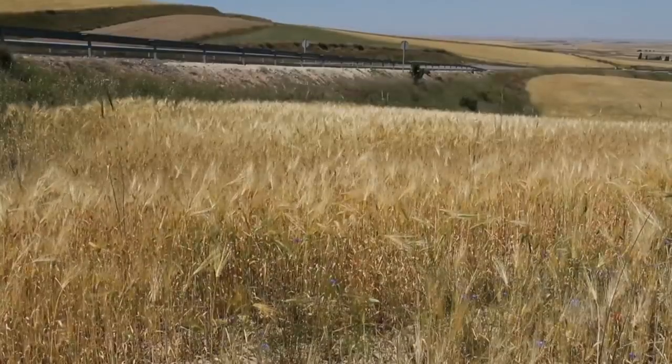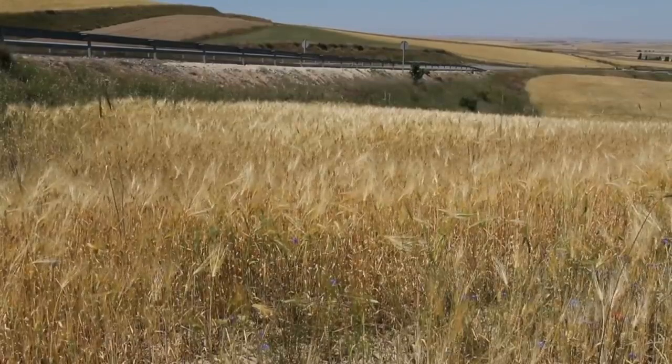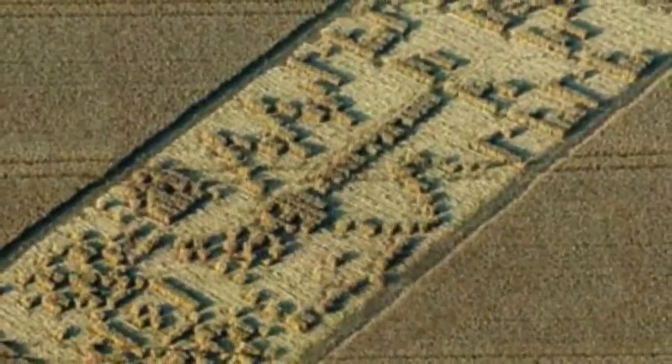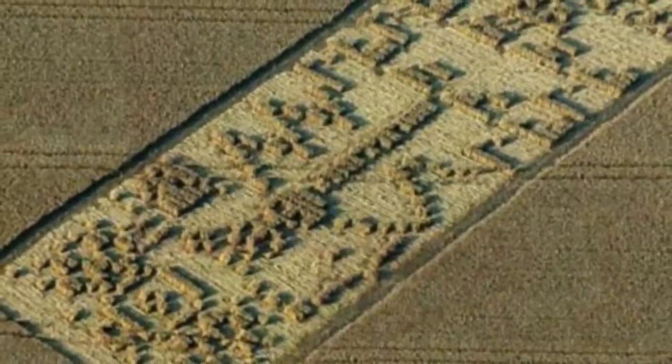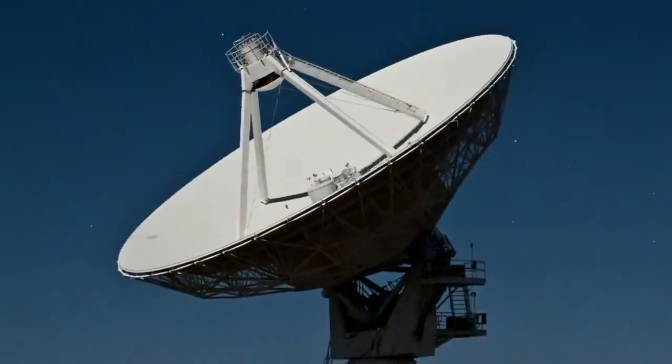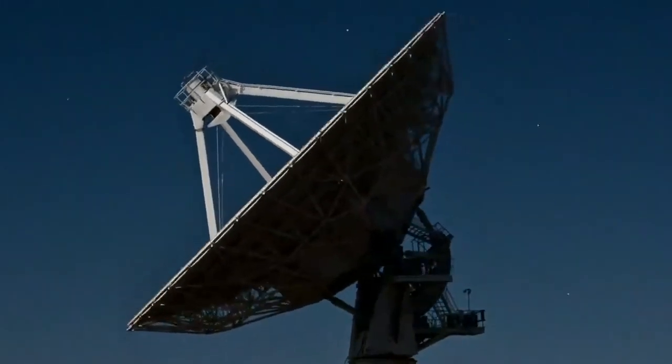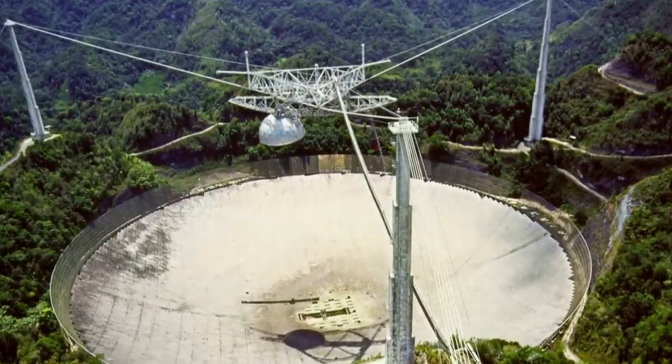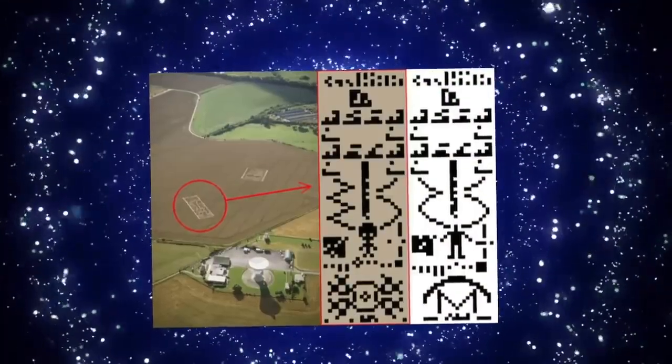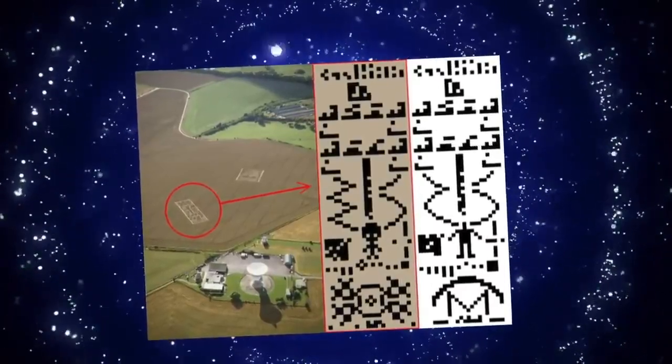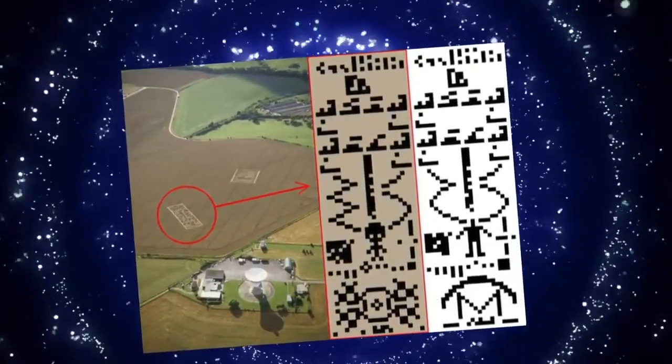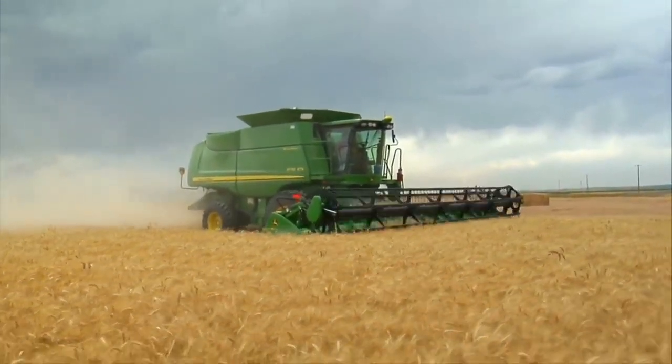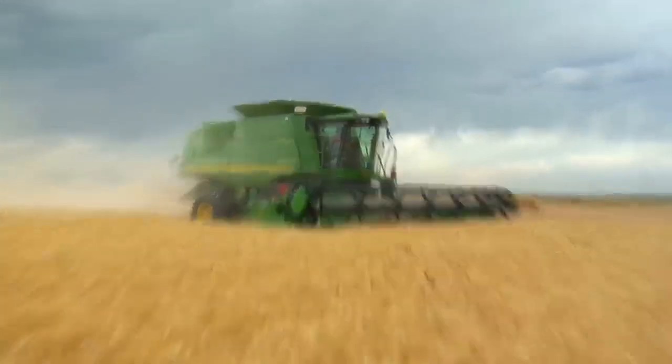27 years later, in 2001, a crop circle appeared, shaking the scientific community. A pattern appeared on a crop field next to the U.K.'s largest telescope and observatory, the Chilbolton, where the world's largest fully steerable meteorological radar is located. This circle in wheat looked like a response to the 1974 broadcast. It was considered by many as one of the most impressive and important crop circles ever to appear on our planet, since the crop circle, unlike others, carries a message, or better said, a response from space.